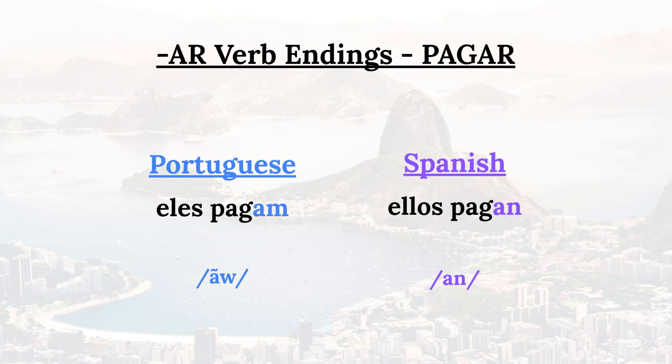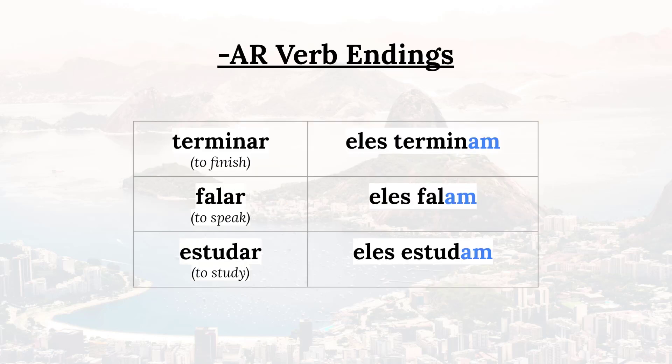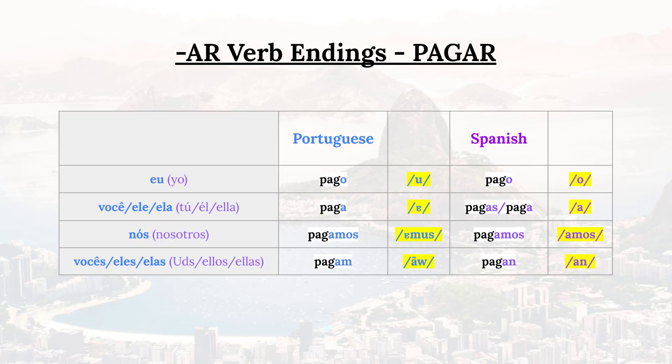Now the third person plural ending is one that trips a lot of people up. 'They pay' is 'eles pagam' — this AM in Portuguese is pronounced with a nasal 'ão' sound: 'pagam,' not 'pagam.' 'They finish' would be 'eles terminam,' 'they speak' is 'eles falam,' 'they study' is 'eles estudam.'